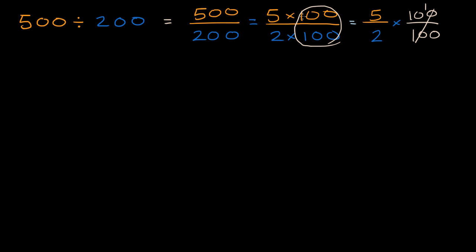Another way to think about it, you could divide the numerator by 100 and you would have five. And as long as you divide the denominator by the same thing, you're not changing the value of the fraction. So if you divide the denominator by 100, you're going to get two.